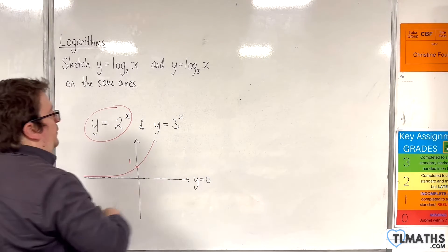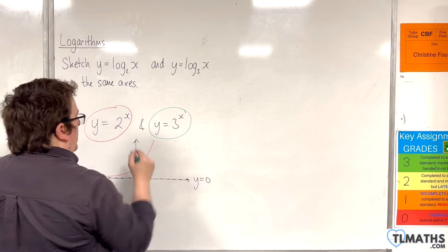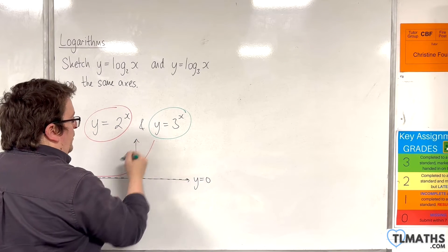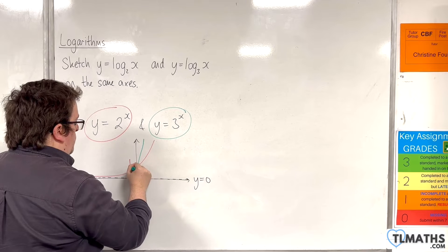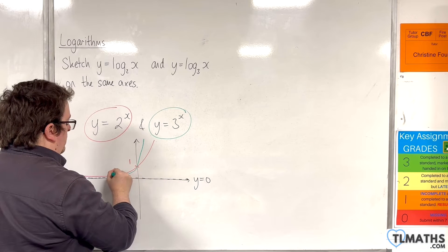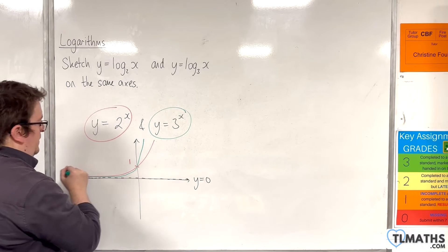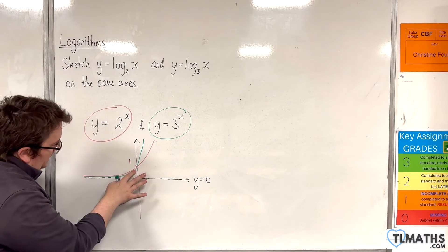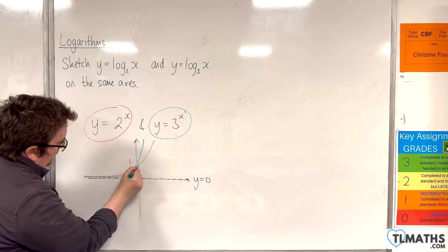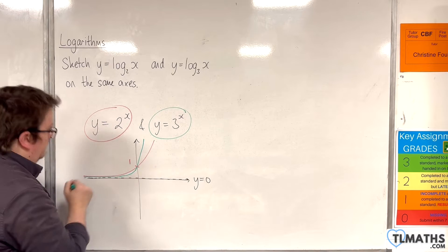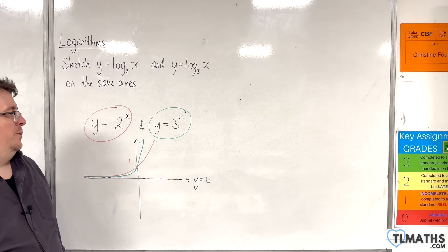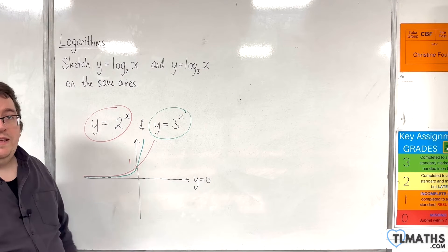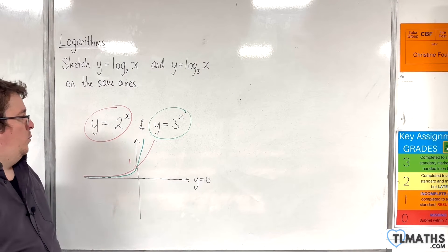And y equals 3 to the x would look steeper to the right of the y-axis, going through 1, and then shallower on the left-hand side. So, I'll even make that a little bit more pronounced there. We've got y equals 2 to the x and y equals 3 to the x, both going through 1 on the y-axis.